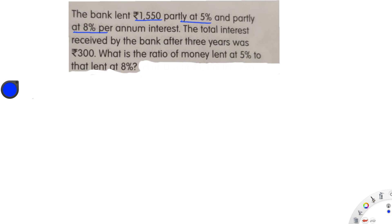They lent that money for 3 years. The total interest received by the bank after 3 years was 300 rupees. So they lent some money at 5% and remaining at 8%, both for 3 years, and after 3 years the bank received an interest of 300 rupees. What is the ratio of money lent at 5% to that lent at 8%?